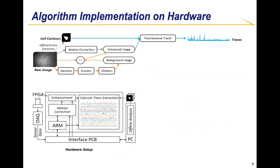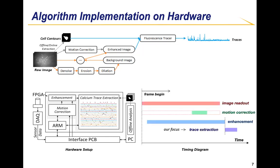This figure shows our developed hardware and embedded systems for the real-time calcium image processing. We implemented dedicated motion correction, image enhancement, and calcium trace extraction accelerators on the FPGA. The embedded ARM processor on the SOC chip can communicate with the FPGA and an external interface PCB board, transferring raw image data from the DAQ to the FPGA, and sending the extracted traces from the FPGA to the host PC over Ethernet. The figure on the bottom right shows the timing diagram of the operations among the accelerators. From it, we can see that a large part of the enhancement and the sensor image readout is overlapped, thanks to our streaming processing fashion. The motion correction's timing depends on the user-defined image search region for template matching, but it can complete during the image readout.